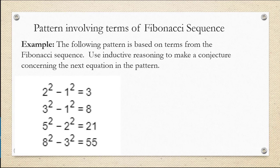So the equations are 2 squared minus 1 squared equals 3, 3 squared minus 1 squared equals 8, 5 squared minus 2 squared equals 21, and 8 squared minus 3 squared equals 55.